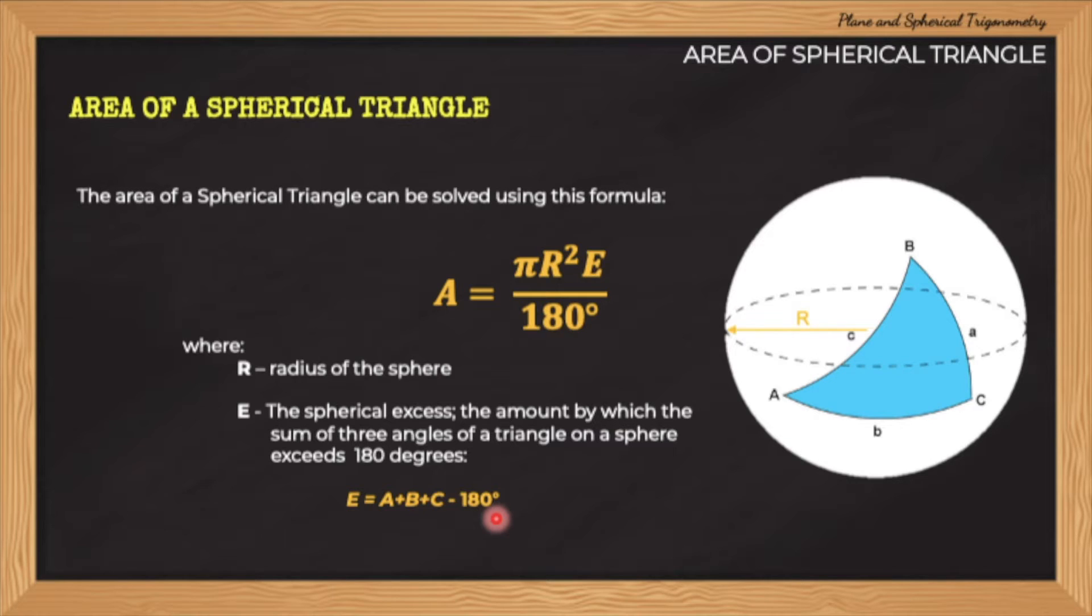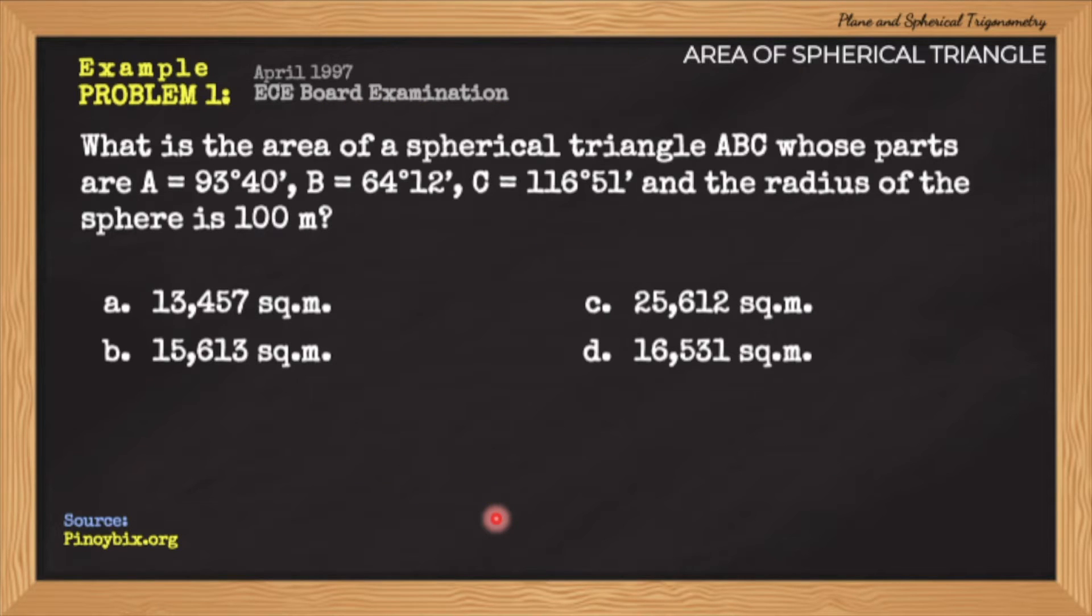Let's take a look at some example problems to see the applications of this formula. For example, problem number one, what is the area of a spherical triangle ABC, whose parts are A equals 93 degrees 40 minutes, B equals 64 degrees 12 minutes, C equals 116 degrees 51 minutes, and the radius of the sphere is 100 meters. So we have choices here. What we are going to compute here in this problem is the area of the spherical triangle.